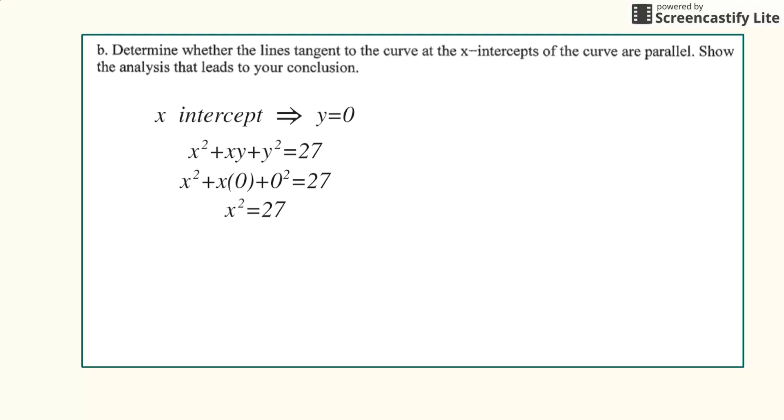So we have x squared equals 27, and then by taking the square root, we get plus or minus 3 radical 3.